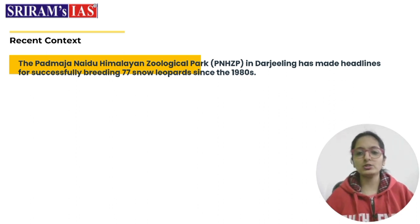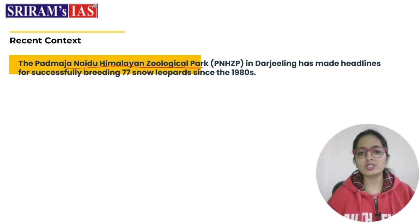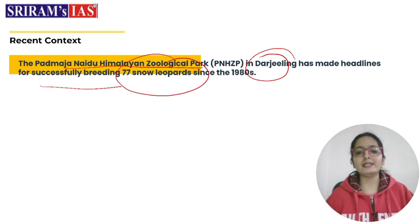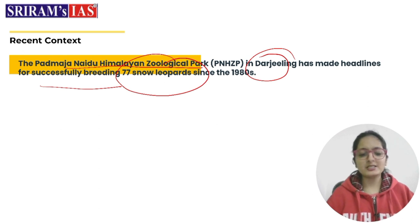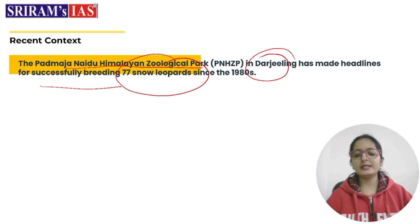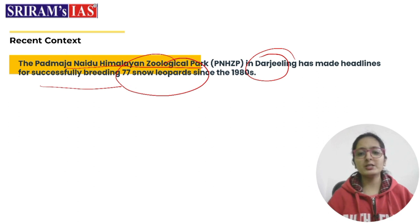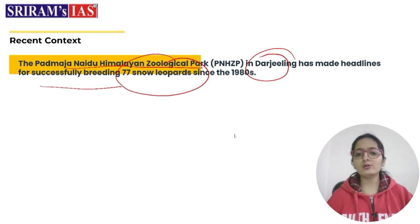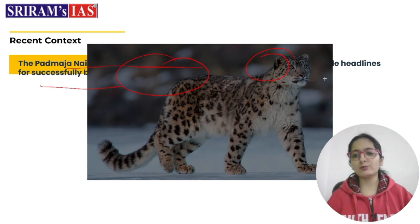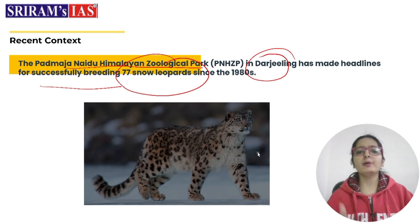The Padmaja Naidu Himalayan Zoological Park in Darjeeling is in the news for successfully breeding 77 snow leopards since the 1980s. As homework, locate this park on a map, along with nearby national parks and tiger reserves — these are very important for your exam. UPSC has frequently asked questions about such topics in previous year papers.